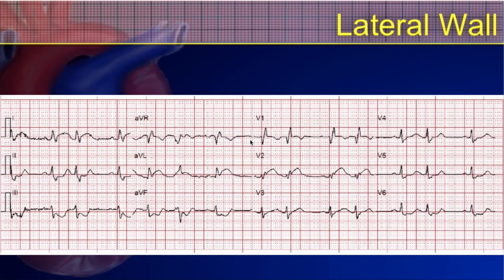Here's a lateral wall myocardial infarction with changes in the high lateral leads — leads 1 and AVL. When we see changes in AVL, we immediately look at lead 3, and we do see reciprocal changes in all of the inferior leads, giving us enough to identify an acute myocardial infarction. Additionally, just as the septal infarct showed high lateral changes, this high lateral infarct shows septal wall changes — a pattern that is relatively common and worth recognizing.